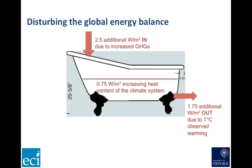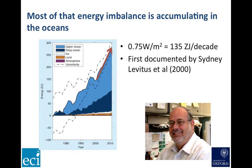So the climate system is like a giant bathtub. The increase in greenhouse gases to date is adding an additional 2.5 watts per square meter continuously, while an estimated 1.75 watts per square meter is being emitted to space, because of the about a degree of warming that's occurred already. So there's an imbalance of roughly three-quarters of a watt per square meter, which must be accumulating somewhere in the climate system. This imbalance was first documented by Sidney Levitas and his co-workers in 2000, who showed that most of the energy was accumulating in the oceans, and confirmed that the global energy budget was out of equilibrium.